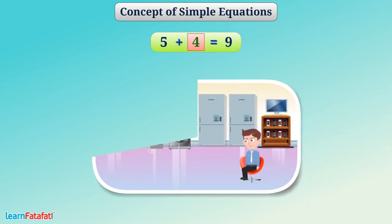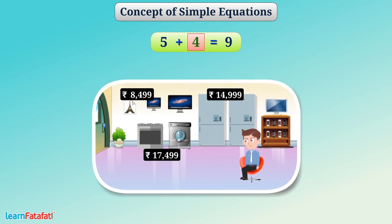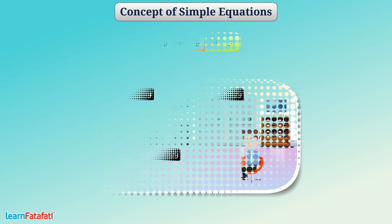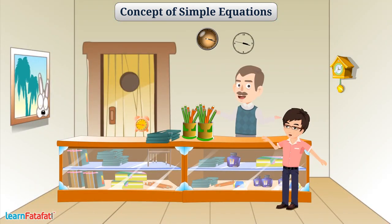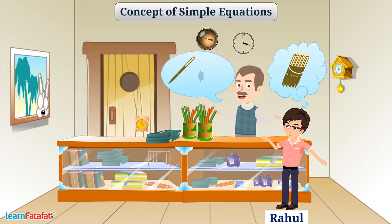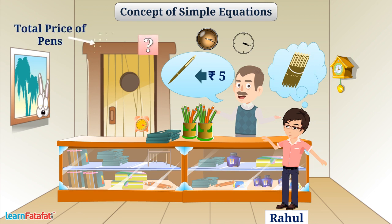In our lives, we come across many situations where we have some unknown number. Say, for example, Rahul is purchasing some pens. Shopkeeper sells pens at rate of Rs 5 per pen. The total price of pens can be written like this.